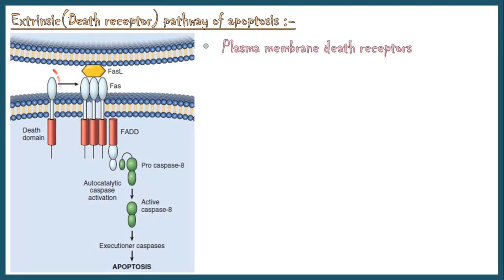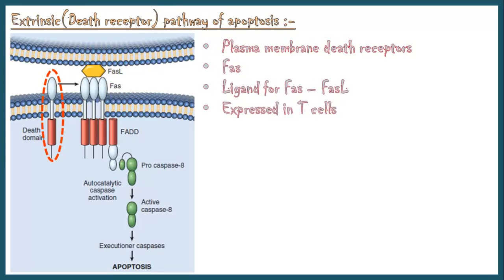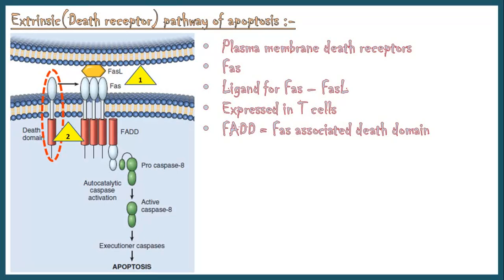Now let's discuss the extrinsic pathway of apoptosis, also known as the death receptor pathway. In this pathway, the death signal comes from outside the cell, and there are transmembrane death receptors on the cell surface to receive these signals. Death receptors are members of the tumor necrosis factor receptor family that contain a cytoplasmic domain involved in protein-protein interactions, called the death domain. The major type of death receptor is called Fas, and the ligand for Fas is expressed on the surface of T cells. First, Fas ligand binds with its receptor. Then, three or more molecules of Fas are brought together, and their cytoplasmic death domains form a binding site for an adapter protein called Fas-associated death domain. This causes formation of active initiator caspase-8 from its inactive form — in humans it is caspase-10. Then the initiator caspase activates executioner caspases and induces apoptosis.